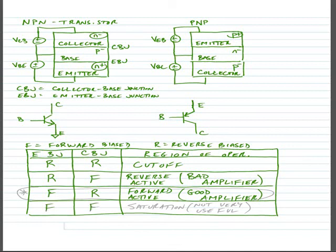If we forward bias both junctions, we get a region of operation that's known as saturation. And we don't use this region very often, so we'll just label this as not very useful.